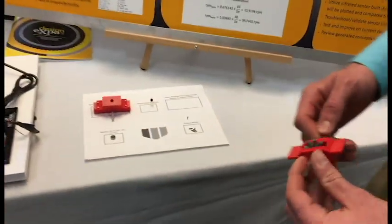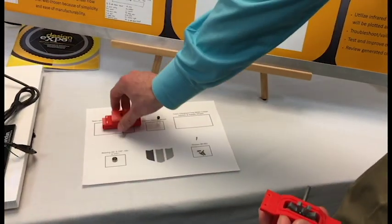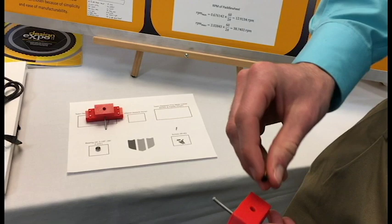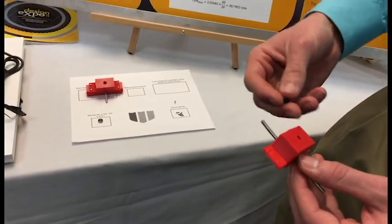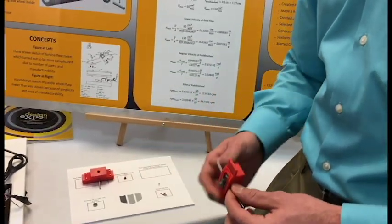These are our concepts we have generated so far. We have the flow rate that goes in here, and it'll turn our little paddle wheel. Then we have a reflective object sensor that will go on top and have a change in voltage output every time a paddle wheel goes by, and we should be able to correlate that change in voltage to the flow rate.